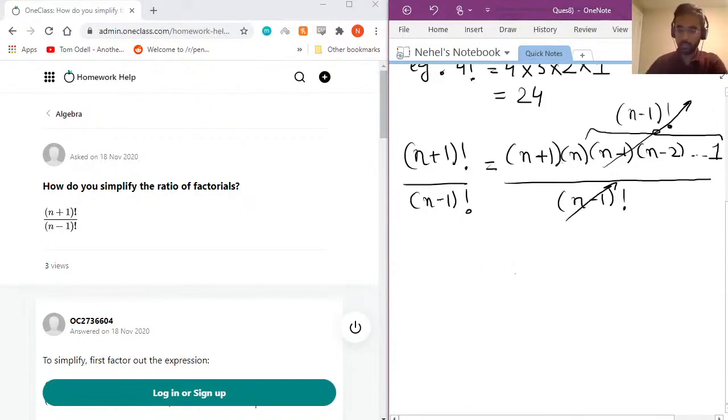Therefore, the right-hand side becomes equal to (n+1) times n. So essentially, the key takeaway from this question is if you have a factorial of a number n and a factorial of a smaller number divided by it, you can get rid of a lot of the numbers.